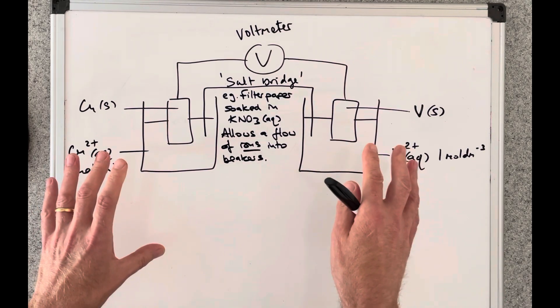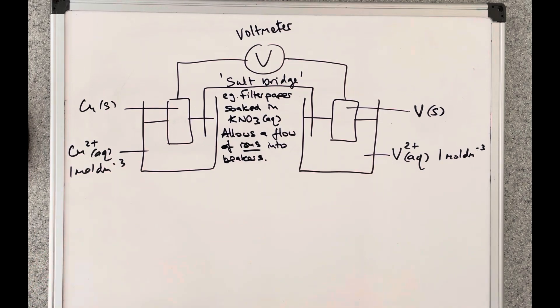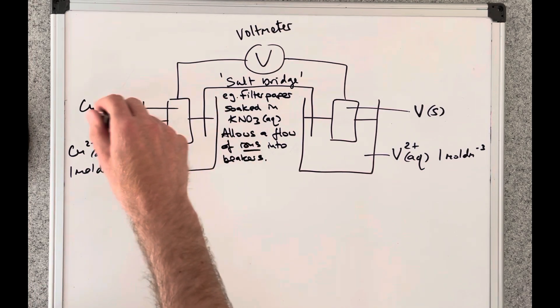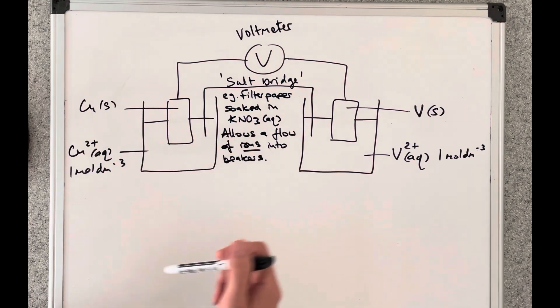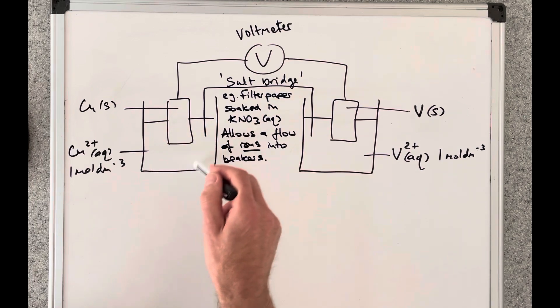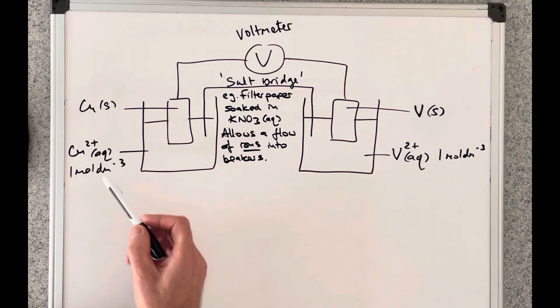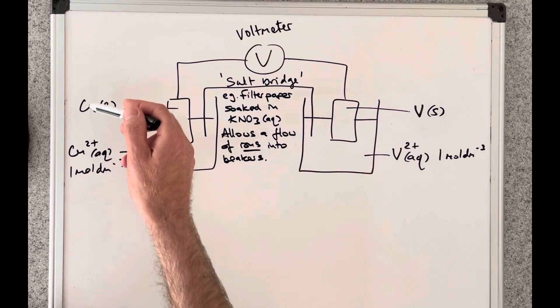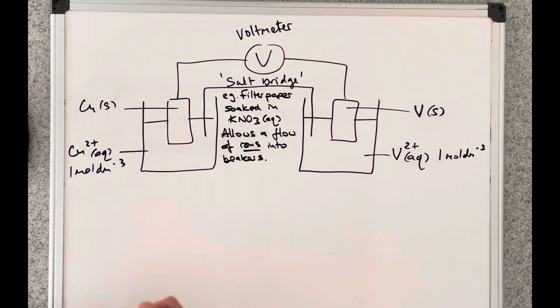I'll quickly talk through this and then we'll talk about what's actually going to happen. Starting on the left hand side we've got a rod of copper, so copper solid, and that's dipping into a one mole per decimeter cubed solution of aqueous copper 2 plus ions. Remember we need two oxidation states present for the substance in question.